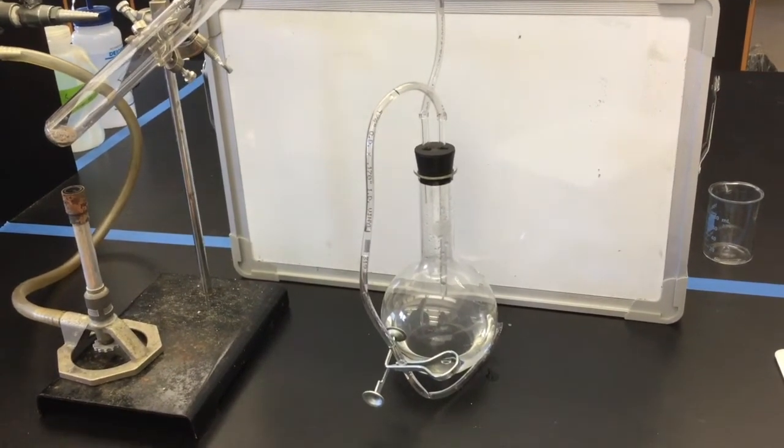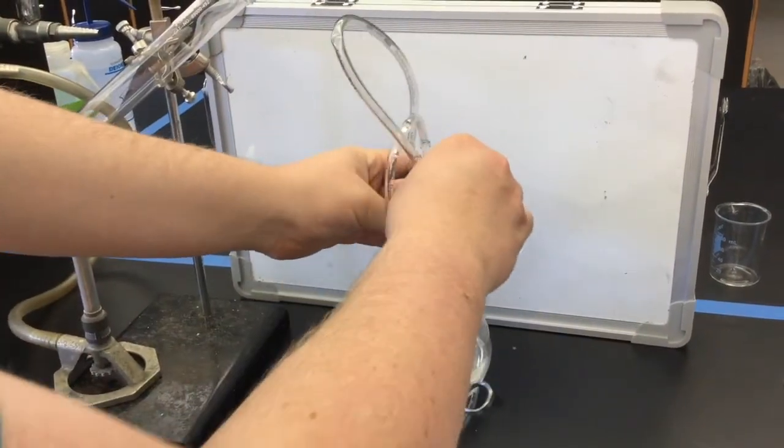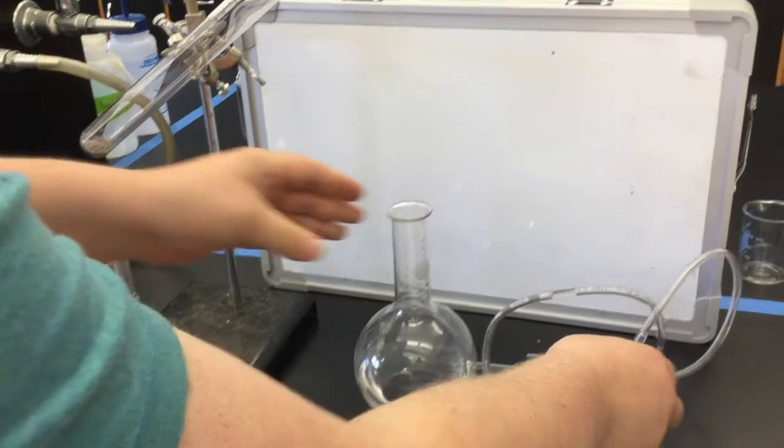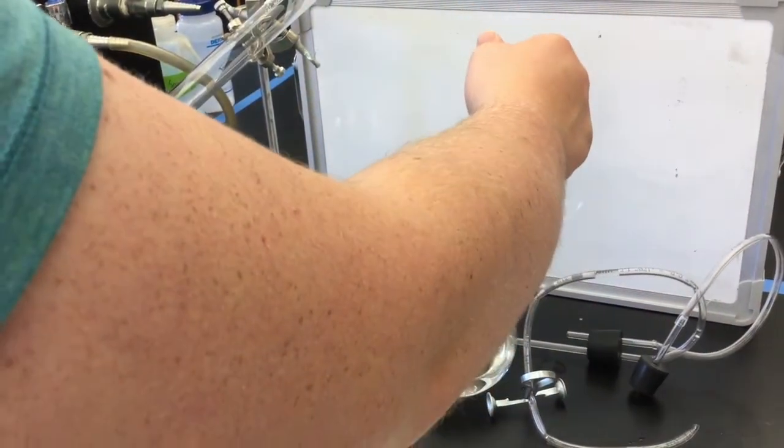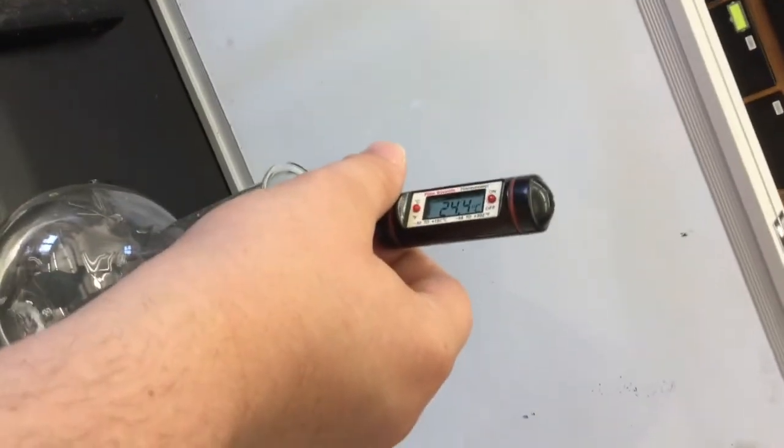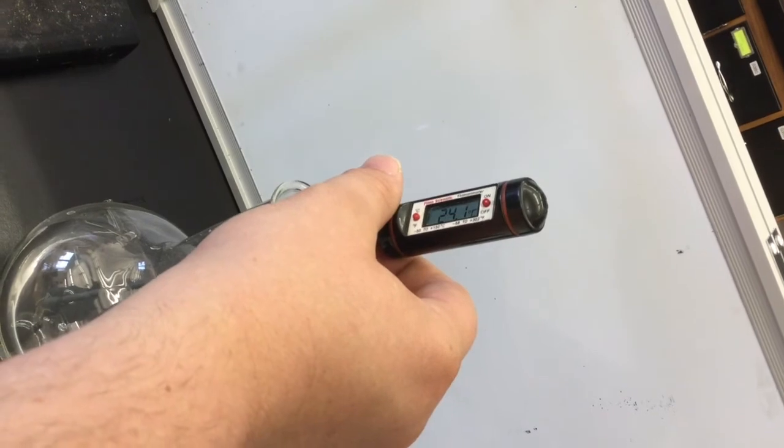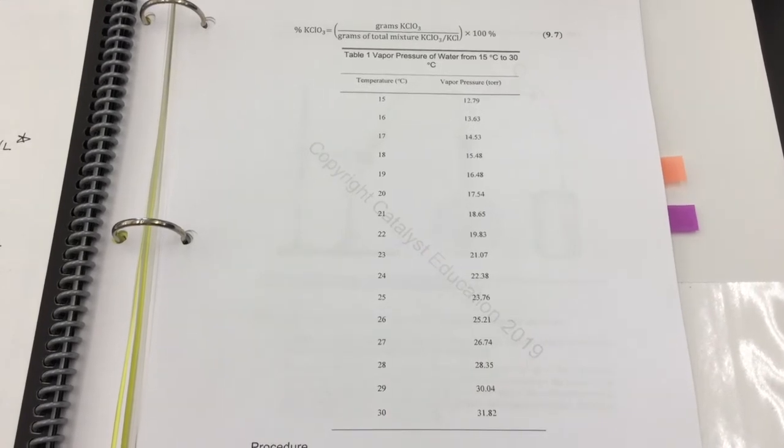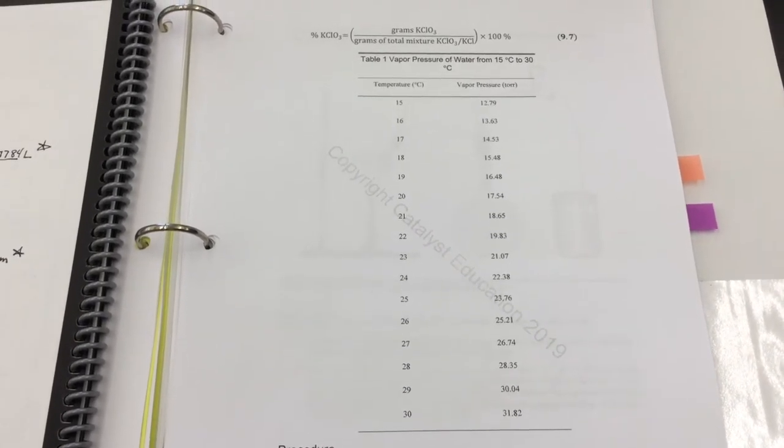Remove the tubing from the flask and the test tube, and use a thermometer to record the temperature of the remaining water in the flask. Remember to allow the thermometer to sit for 30 to 45 seconds so that the temperature can stop changing and equilibrate with the water. Use the table in your lab manual, along with the temperature you just recorded, to determine the vapor pressure of the water in the gas that was produced.